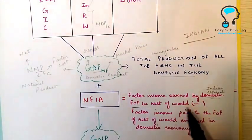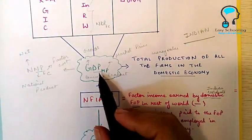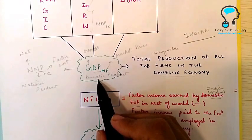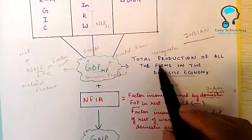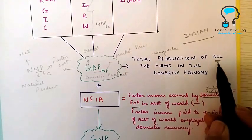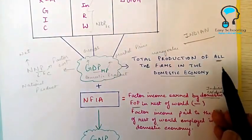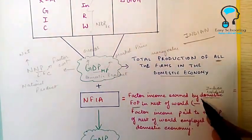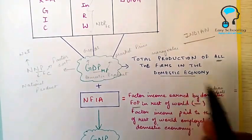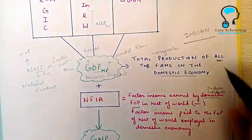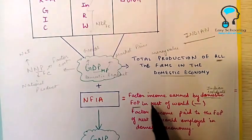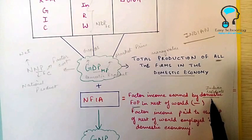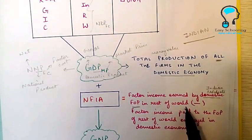So income earned by domestic factors of production in rest of the world has to be added to make it the national product. From the definition we know that it includes the production of all the firms. This also includes the firms which are not Indian but are working in the domestic territory of India.